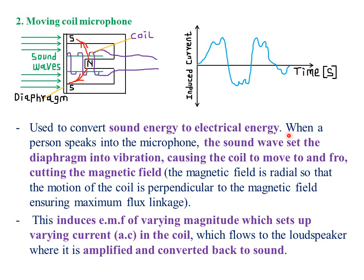When a person speaks into the microphone, the sound waves set the diaphragm into vibration, causing the coil to move to and fro — to the left and to the right — cutting the magnetic field. The magnetic field is radial, placed such that as the coil vibrates to and fro, it cuts the magnetic field lines at an angle of 90 degrees, ensuring maximum flux linkage and therefore maximum EMF induced in the coil. Because the sound wave is varying, the induced EMF will also be varying — it is in the form of alternating current. The graph of induced EMF against time is sinusoidal.